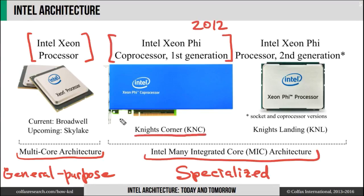It was available as a coprocessor — a PCI Express add-in card — and you had to have a system with a host CPU, usually a Xeon, to run one or several of these coprocessors.